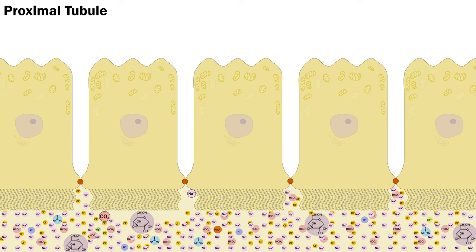Sodium reabsorption takes place in different quantities and ways throughout the nephron, and different diuretic classes reduce body fluid volume by interrupting the reabsorption process. The proximal tubule will consistently reabsorb about 65% or two-thirds of the GFR — this variable capacity helps compensate for changes in GFR over time, known as glomerulotubular balance. Proximal solute reabsorption can also be upregulated by angiotensin II signalling, specifically for sodium.